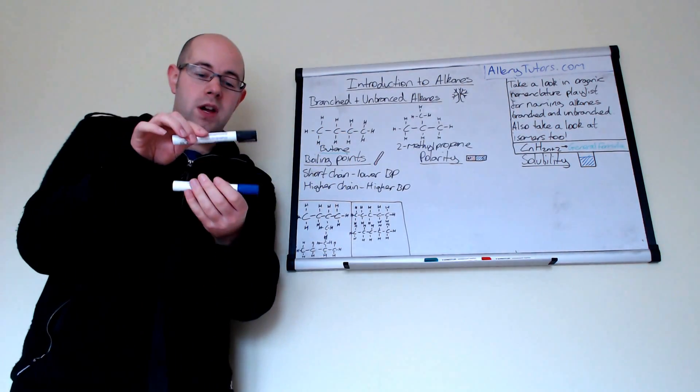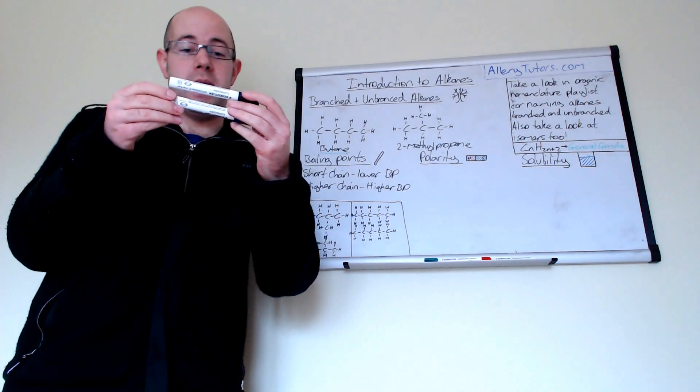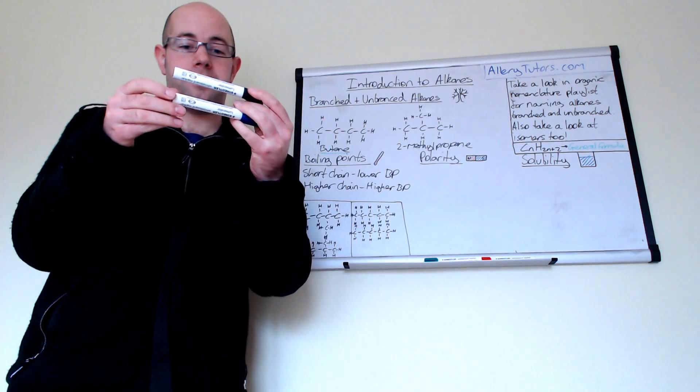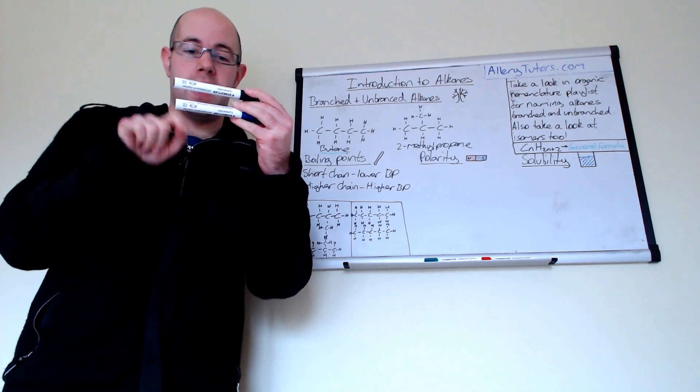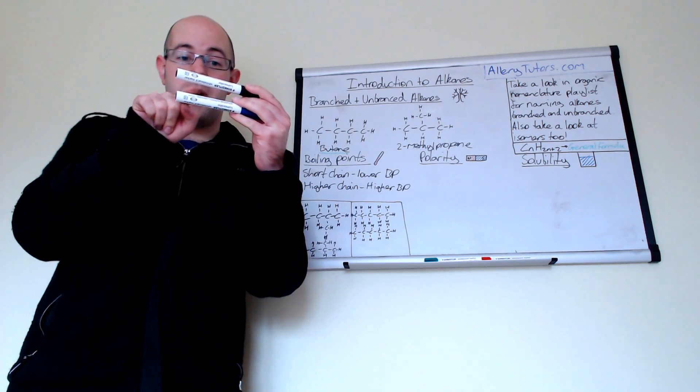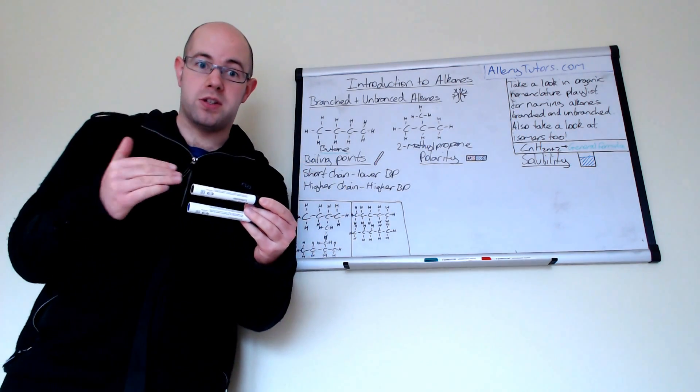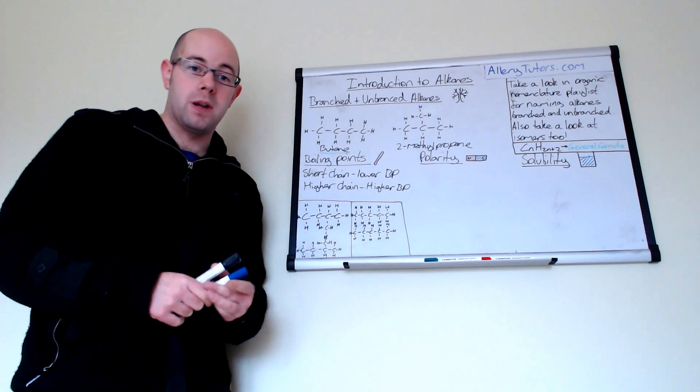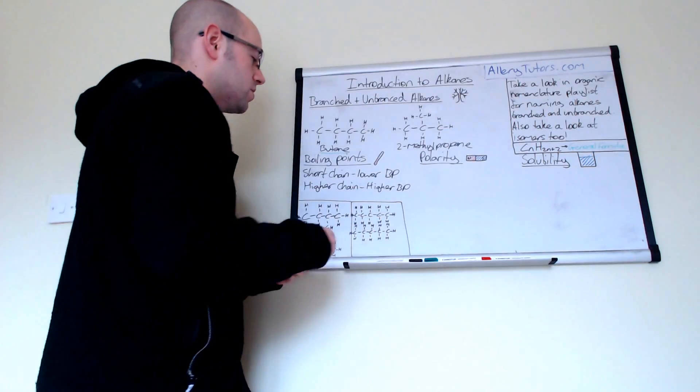So if you imagine we have two hydrocarbons here, which are these two pens. So in between these two pens, you have weak intermolecular forces. Now if it's a really long chain, then you'll have loads of opportunity for an intermolecular force to form between the two. So the longer the chain, the higher the van der Waals forces, and therefore your boiling point will increase.